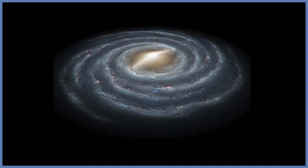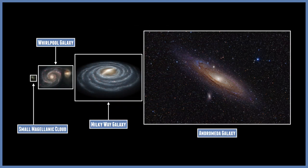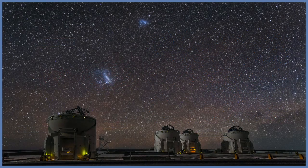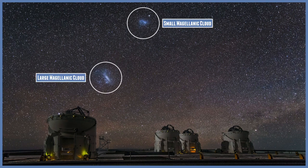The Milky Way is a large barred spiral galaxy, but there are many galaxies that are much larger, and also many that are a lot smaller. As for the most common galaxies in the universe, astronomers think they are tiny faint galaxies called dwarf galaxies. The combined mass of all these dwarf galaxies in the known universe exceeds the mass of all the large galaxies taken together.